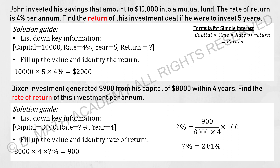Let's run the calculation: 10,000 multiplied by 5 years, multiplied by 4%, you should get 2,000 as the return. Return is also considered as interest earned.